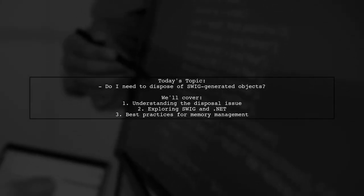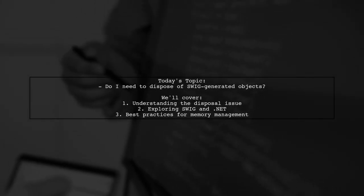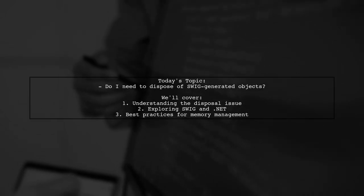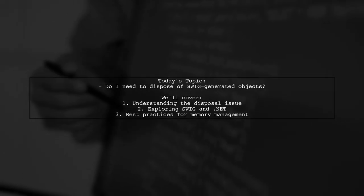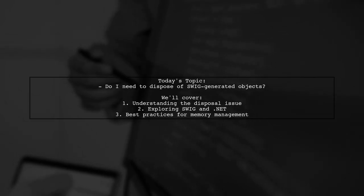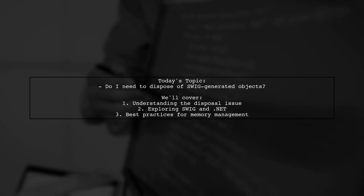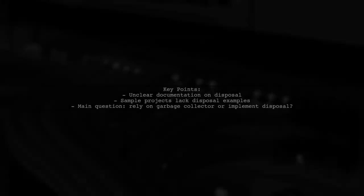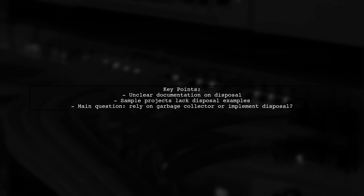Welcome to our Tech Explainer video. Today we're tackling a question that many developers encounter when working with SWIG-generated objects in .NET. Our viewer asks: Do I need to dispose of SWIG-generated objects? They're using a library built with SWIG, but the documentation is unclear about whether any of the generated classes require disposal. They've noticed discussions online about disposing of child elements, yet the sample projects don't demonstrate any disposal practices.